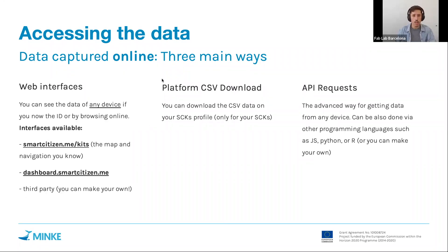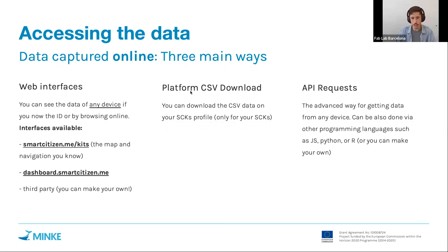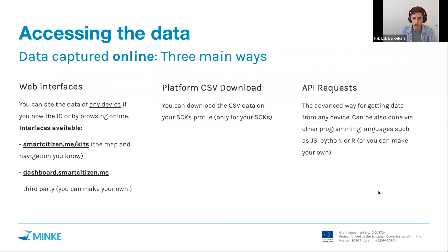Another way to access data — slightly more advanced — is to download it in CSV format from the platform. You can do this from your kit's page and you will receive an email as soon as the data is processed.